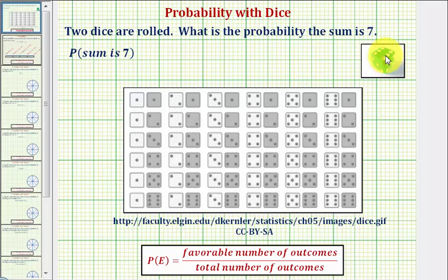To determine the probability of an event, we want to compare the favorable number of outcomes to the total number of outcomes.